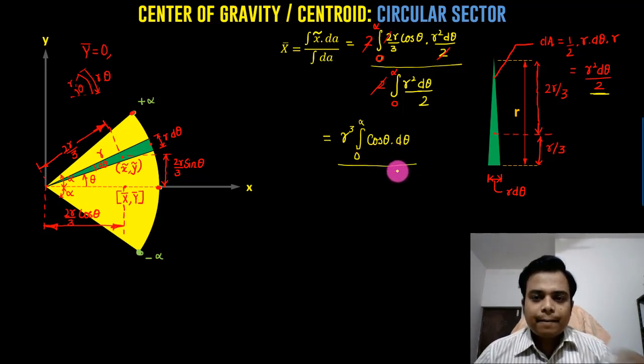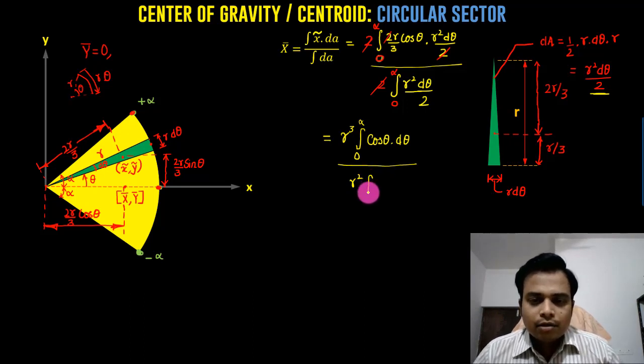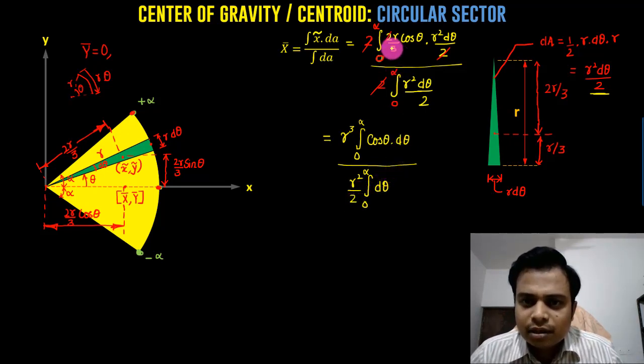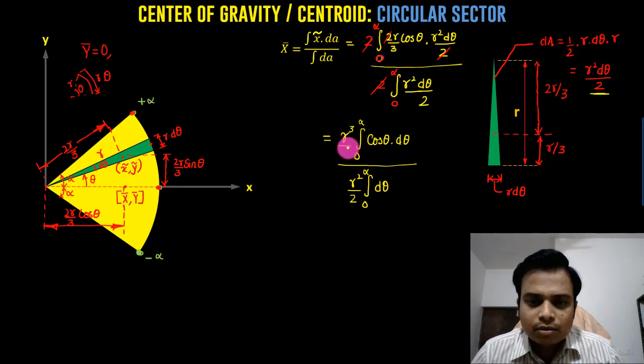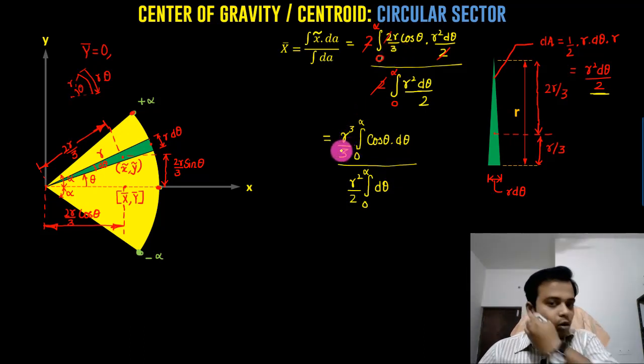And all of this divided by, again we have an r squared taken outside since it is a constant. We have an integral from 0 to alpha, and we have a 2 over here, and this is going to be dθ. This 3 is something that I have missed out, over 3.